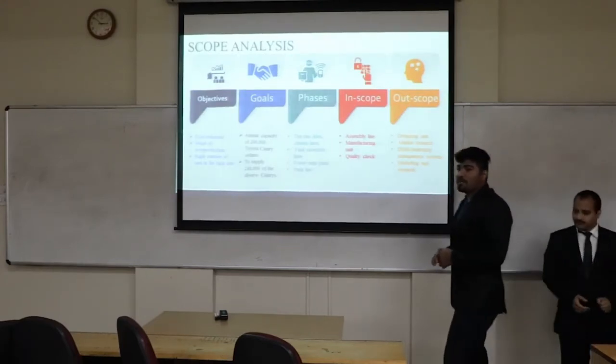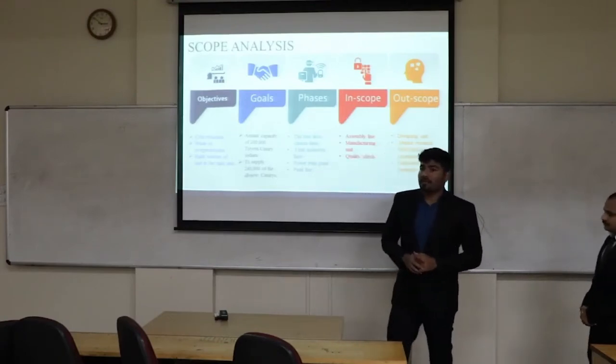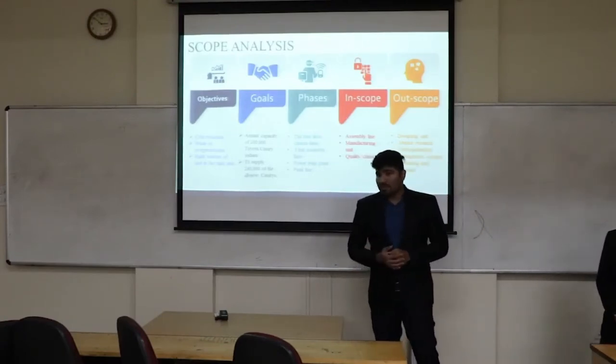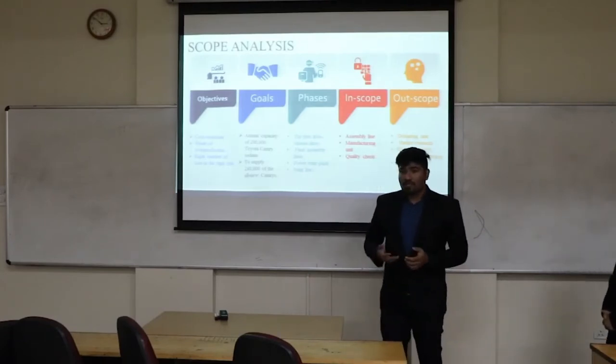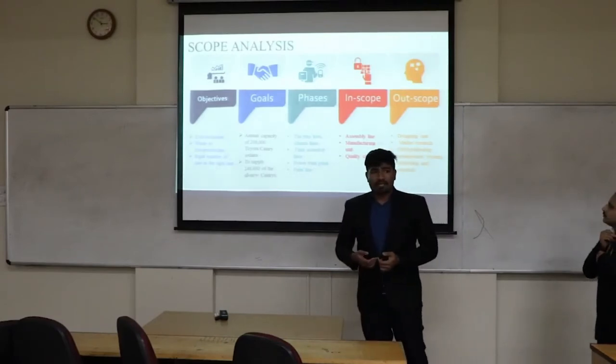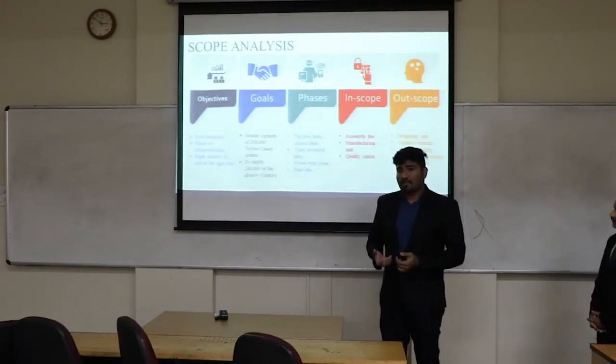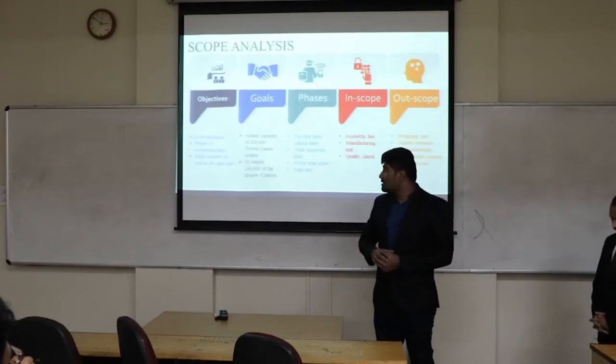The scope analysis of the whole project is divided into 5 different parts covering objectives, goals, in scope and out scope. The project was initiated with the objective of source detection of the overall production and decreasing the waste overall, because there was a lot of waste happening and cost was incurred on it.